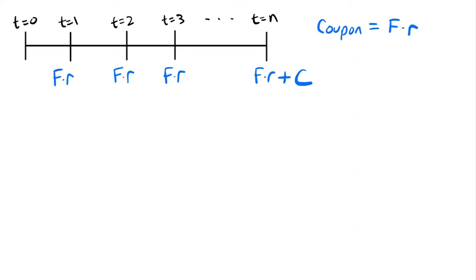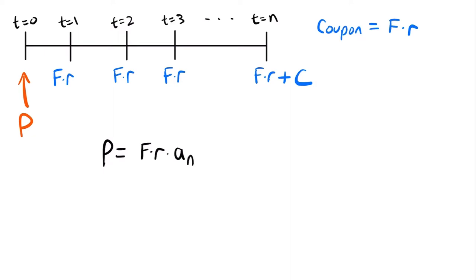The price equals the present value of the series of coupons paid plus the redemption amount paid at the end of the term, calculated at time zero. Ignoring the plus C for a moment, we just have a series of coupon payments F times r for n periods — that's an annuity immediate. So we represent that as F times r times a-angle-n at j, where j is the yield rate. This gives the present value of all coupon payments up to time n.